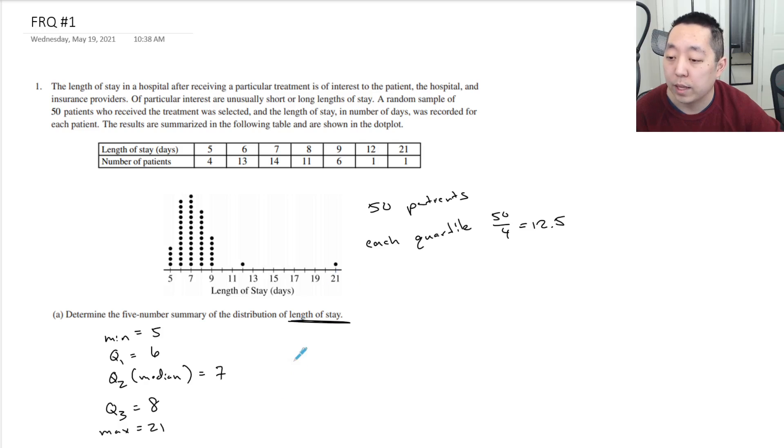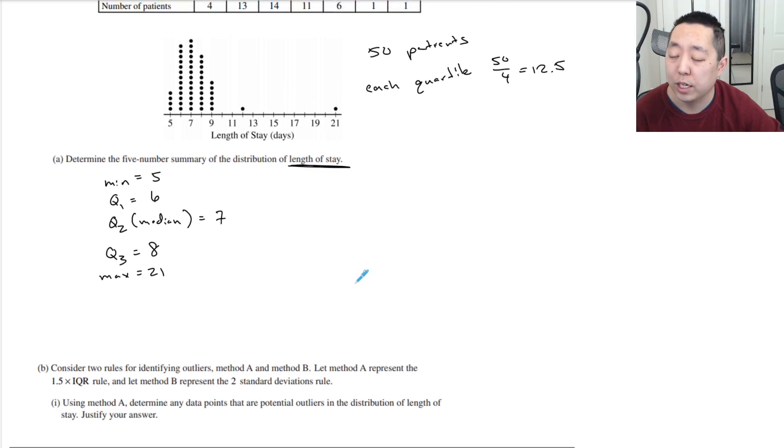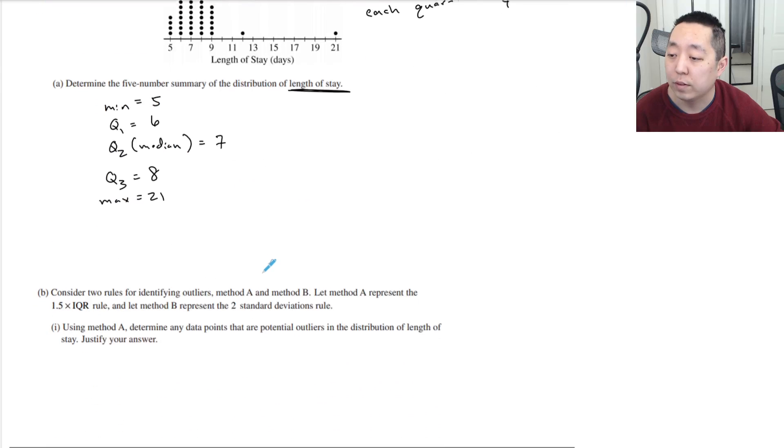I think that's what they mean by that one. I'd have to double-check my terminology. I don't know if they mean IQR and stuff like that, but I think this is the normal five-number summary when you have something like that.